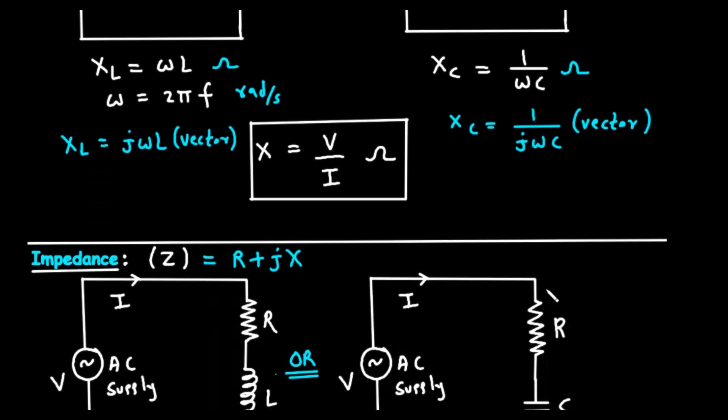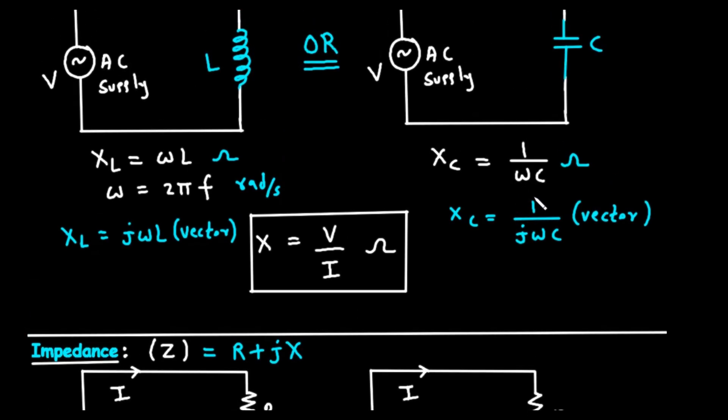This negative sign is also very important. It tells us that in a capacitor, the voltage and current are also out of sync, but in the opposite way. The voltage across the capacitor lags behind the current by 90 degrees.